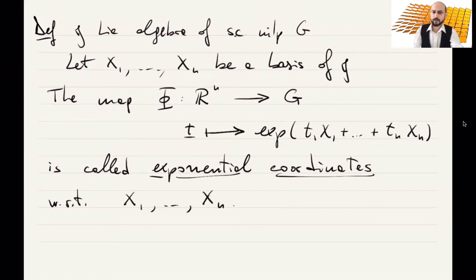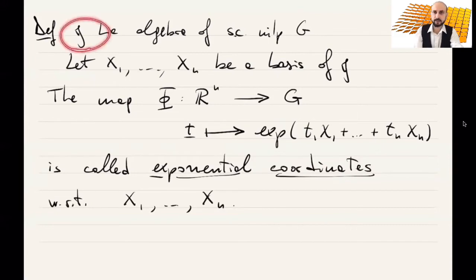I would like to present some properties of these exponential coordinates. Let's remember what it means to have a simply connected nilpotent Lie algebra and see how we can choose a special basis.